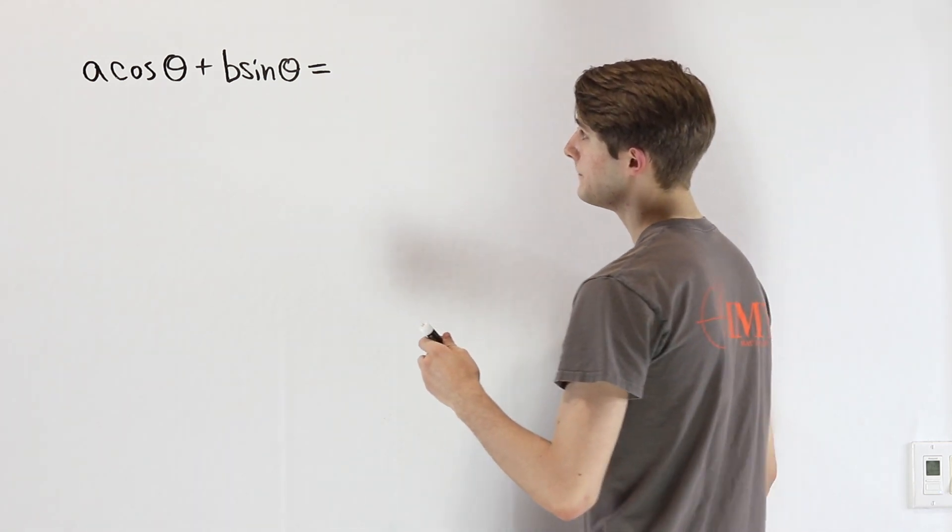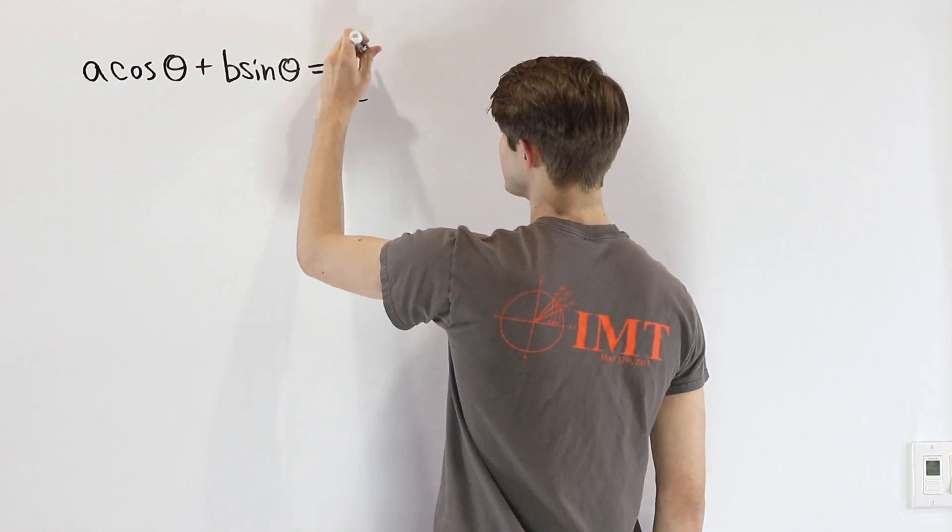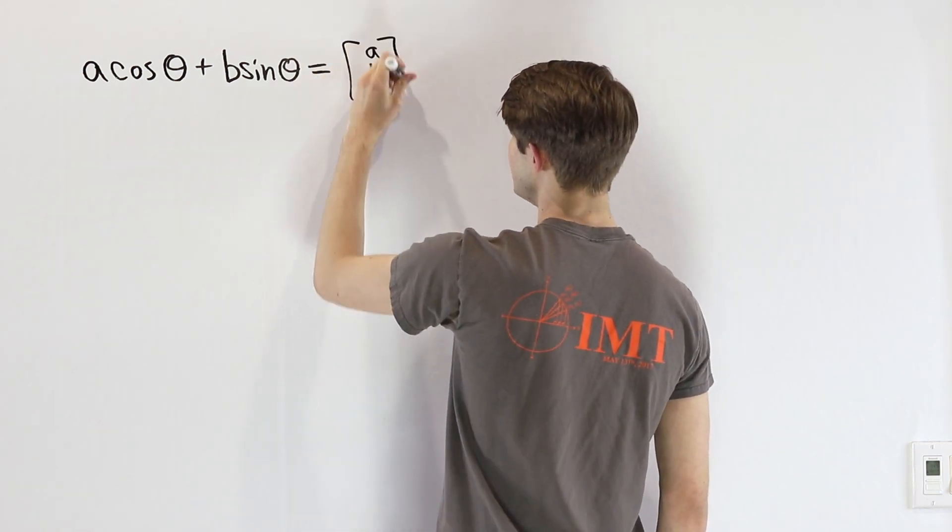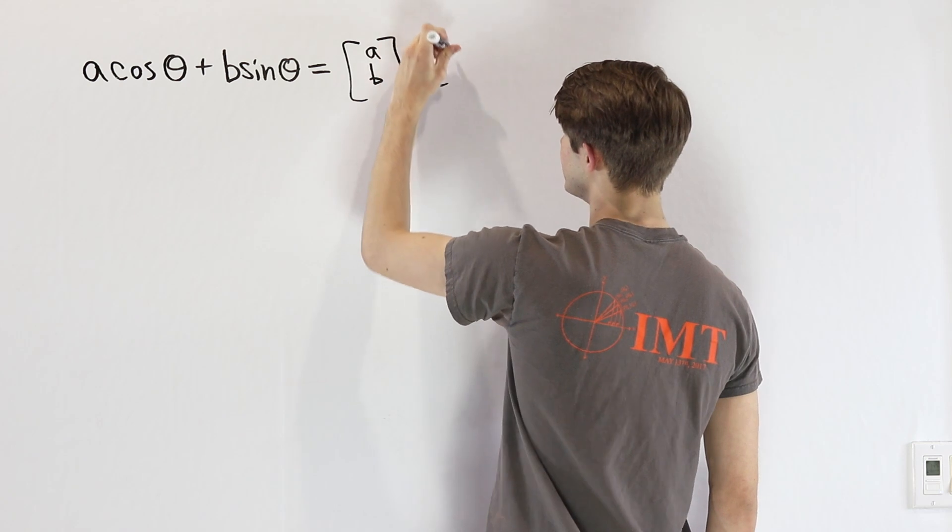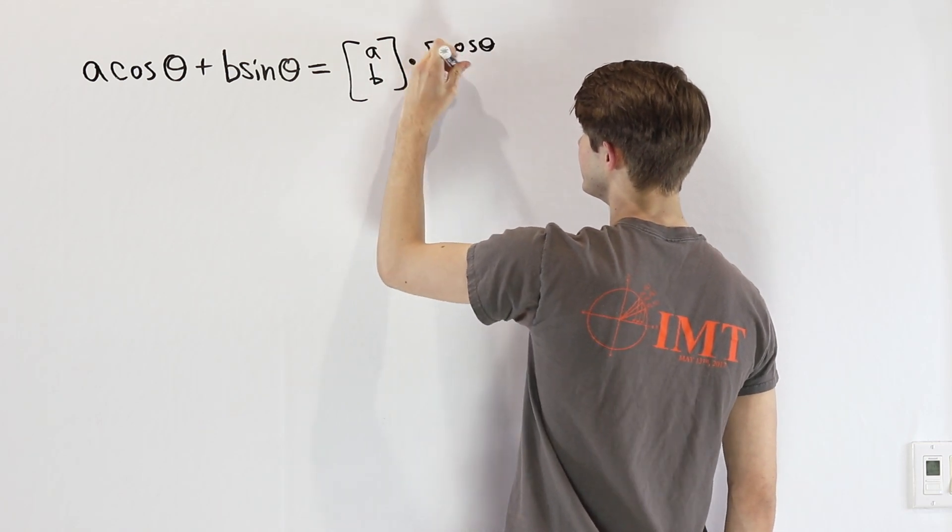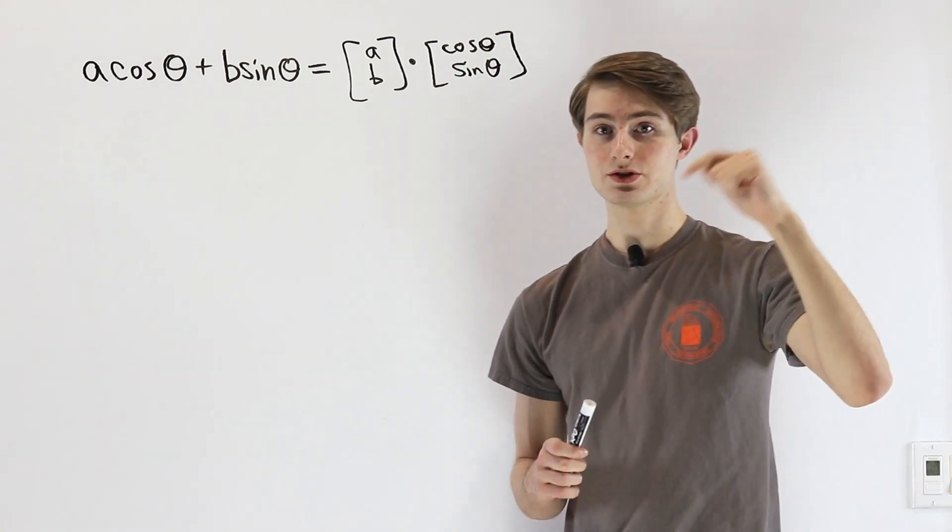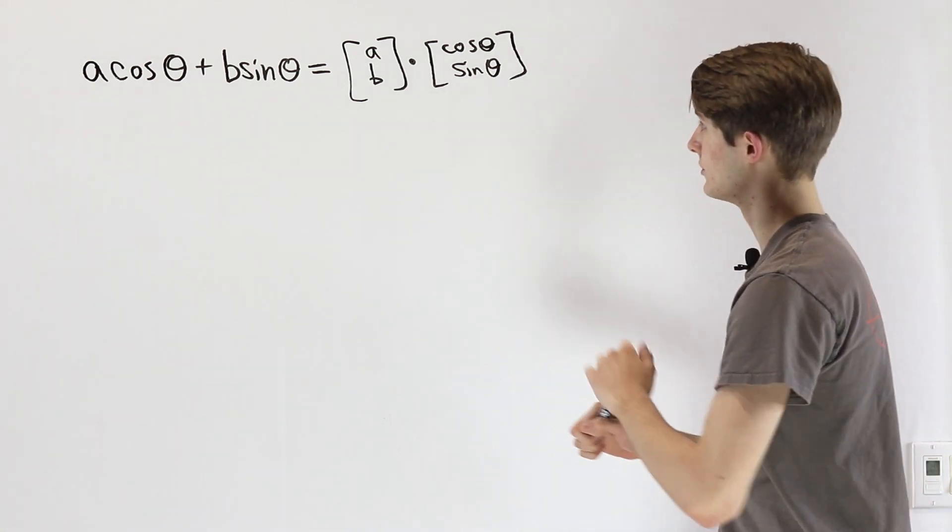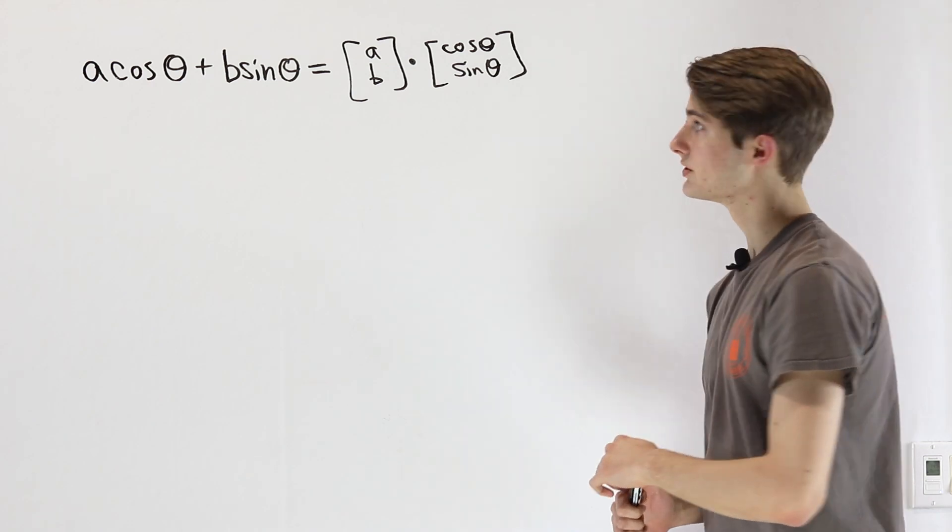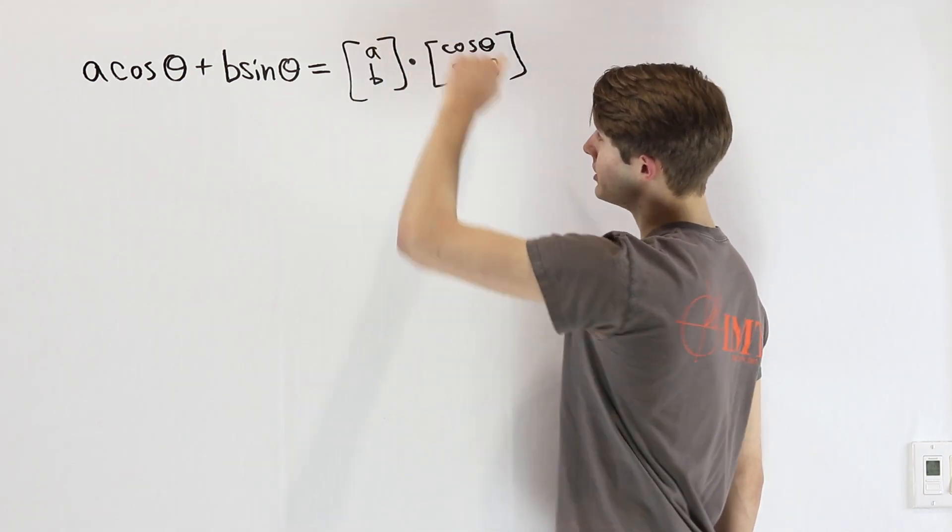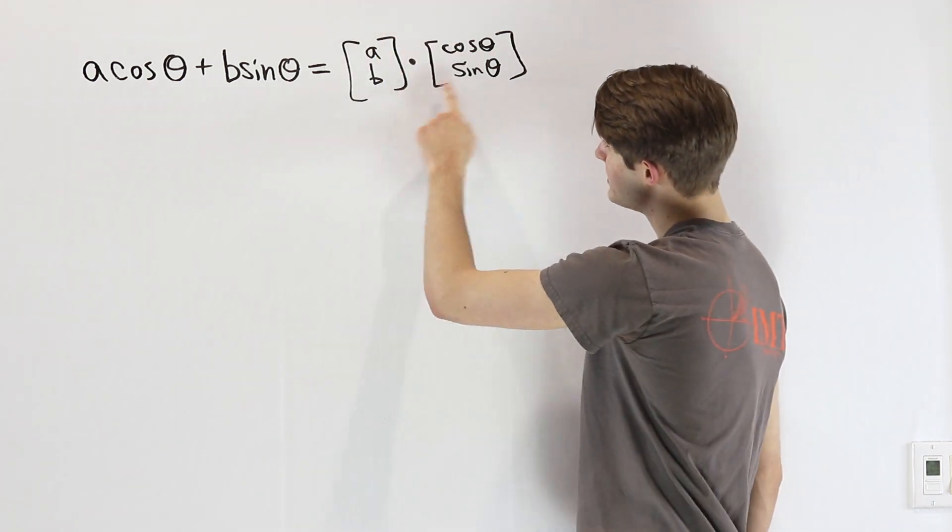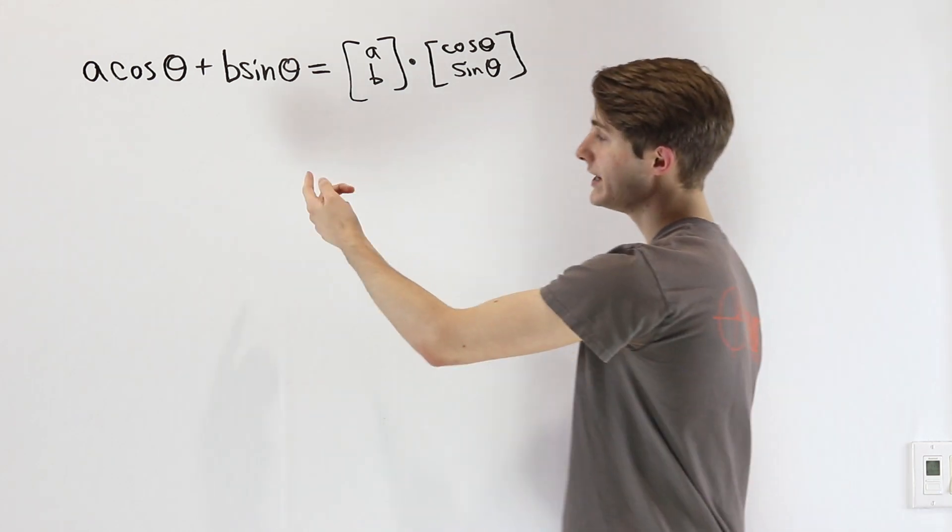The way we can do that is taking the dot product between a vector [A, B] and another vector [cos θ, sin θ]. If you haven't heard of the dot product, I put a link in the description to my video explaining how this works. When we do this, we get A times cos θ on the top, B times sin θ on the bottom, and then we add those together.